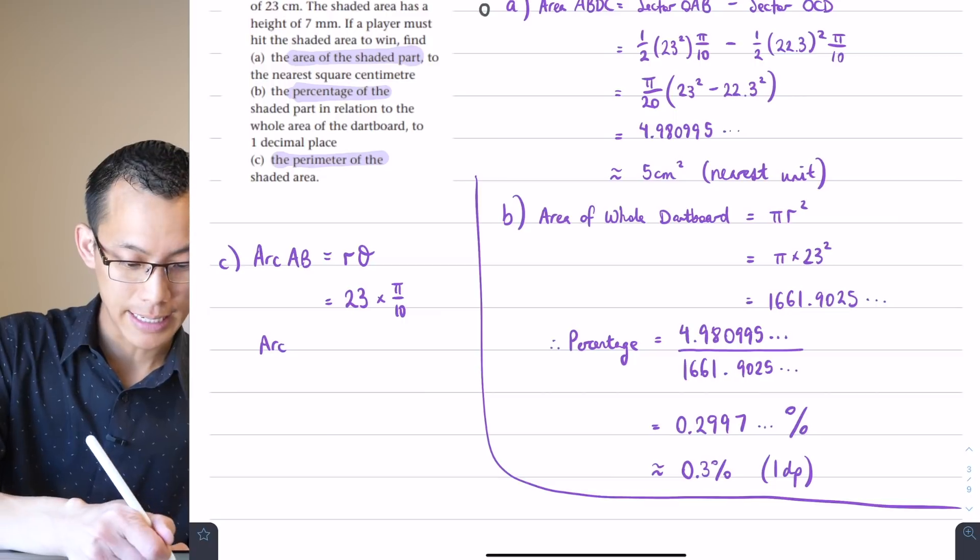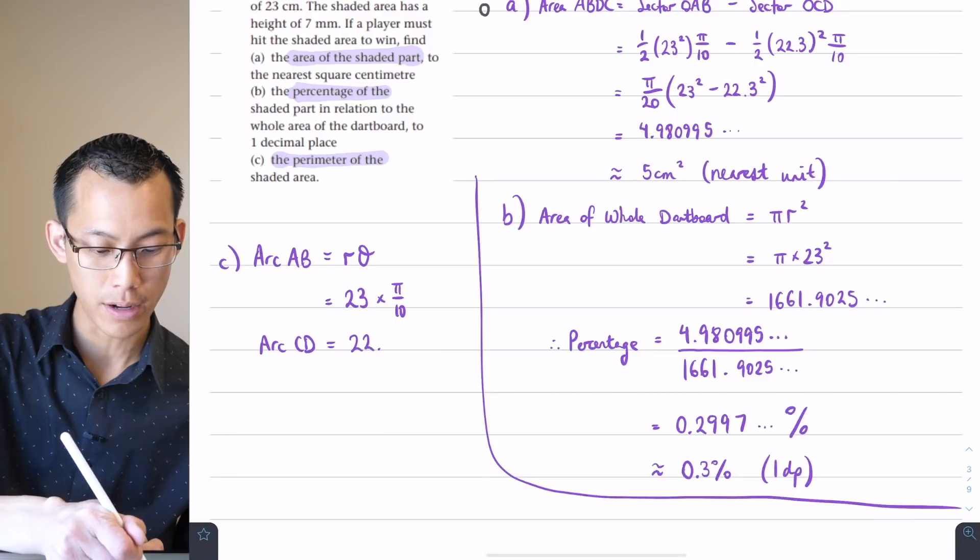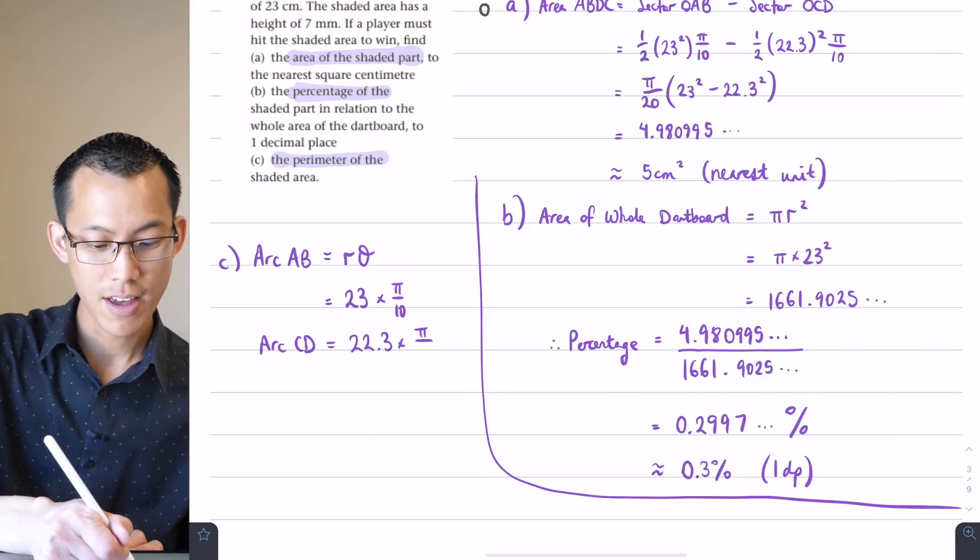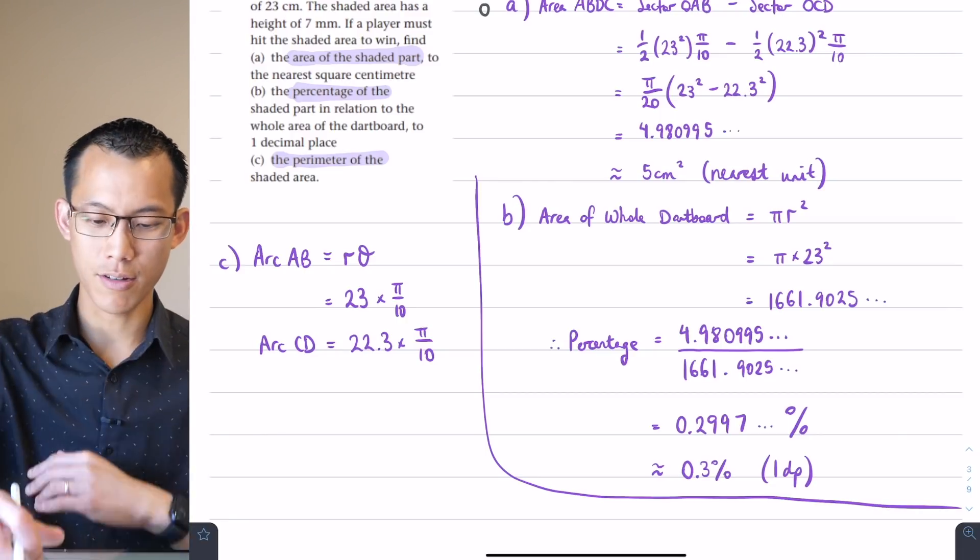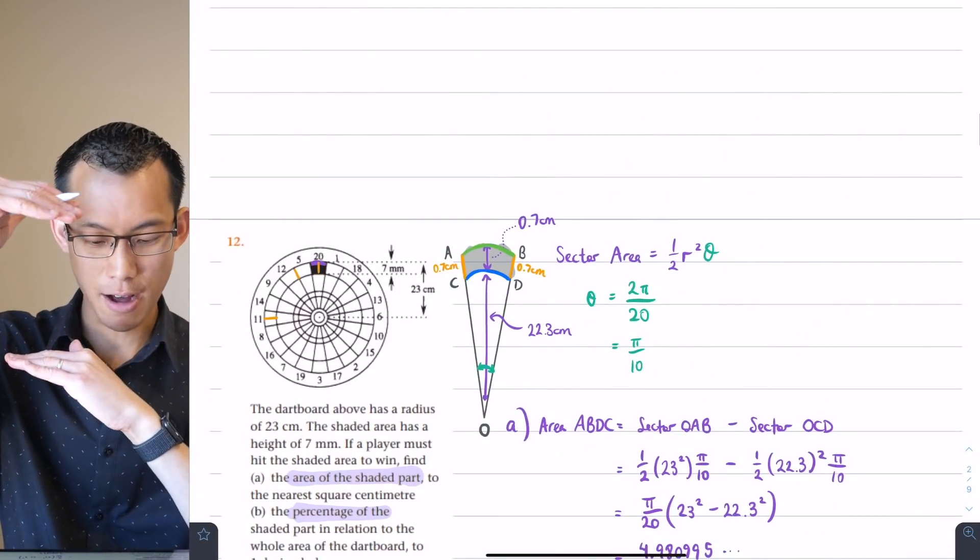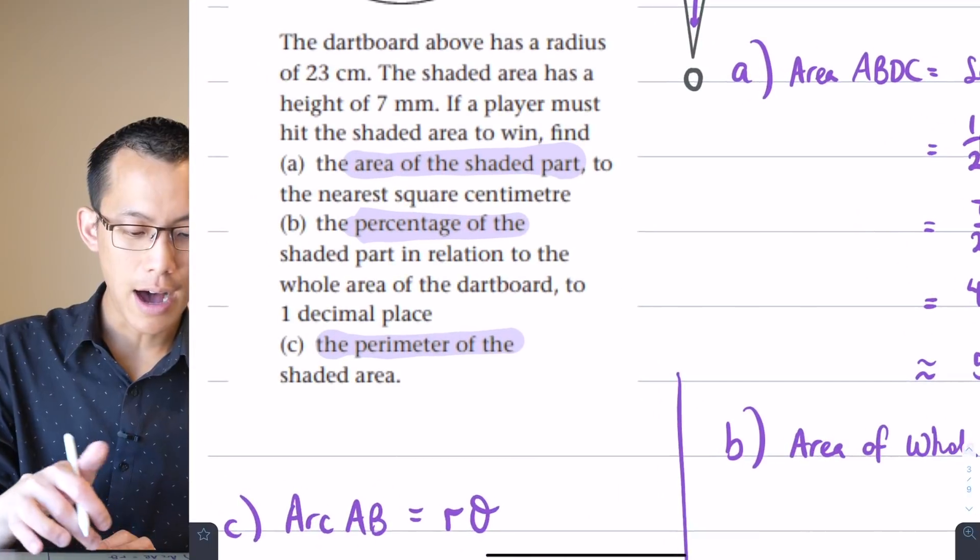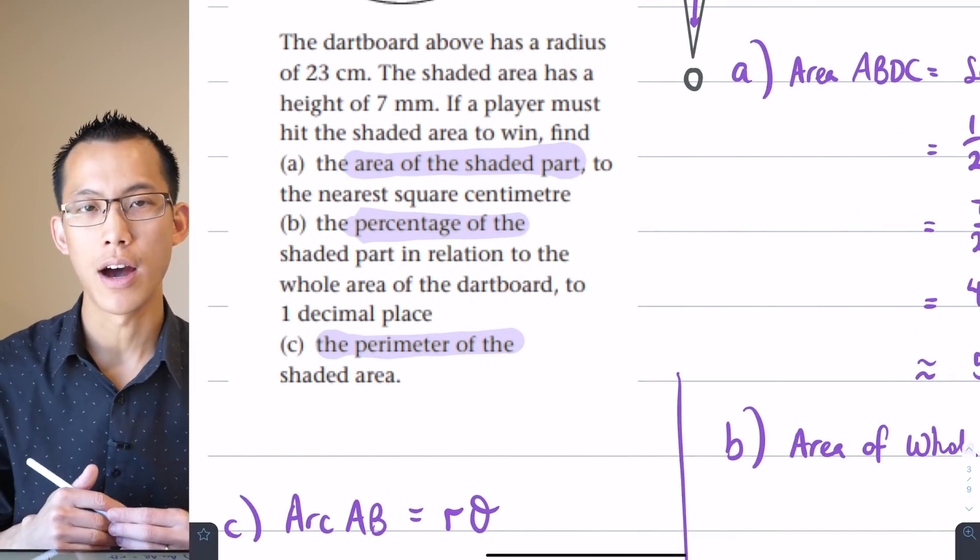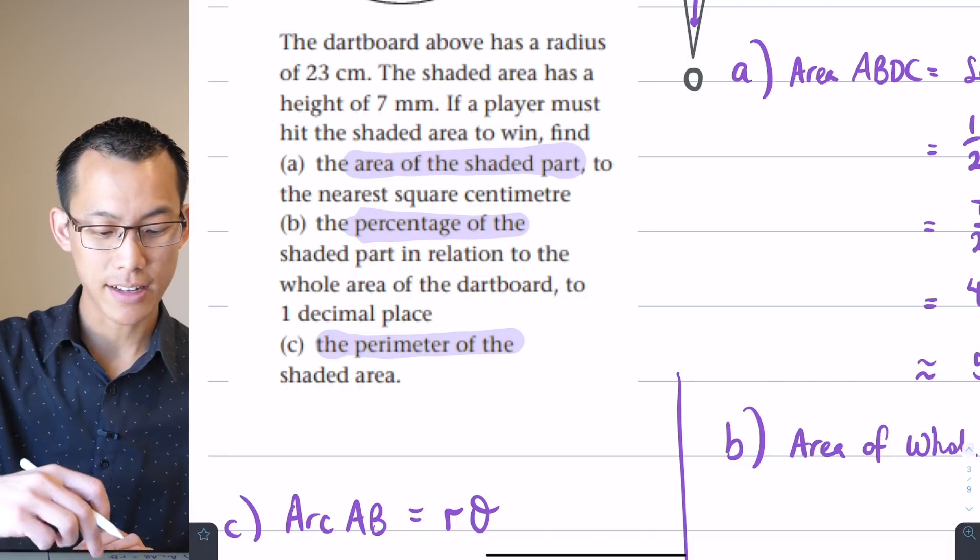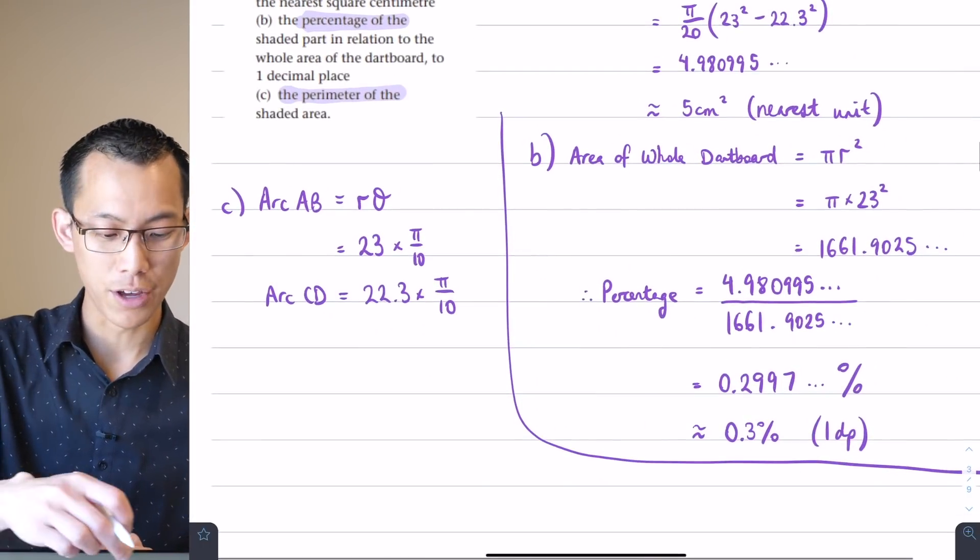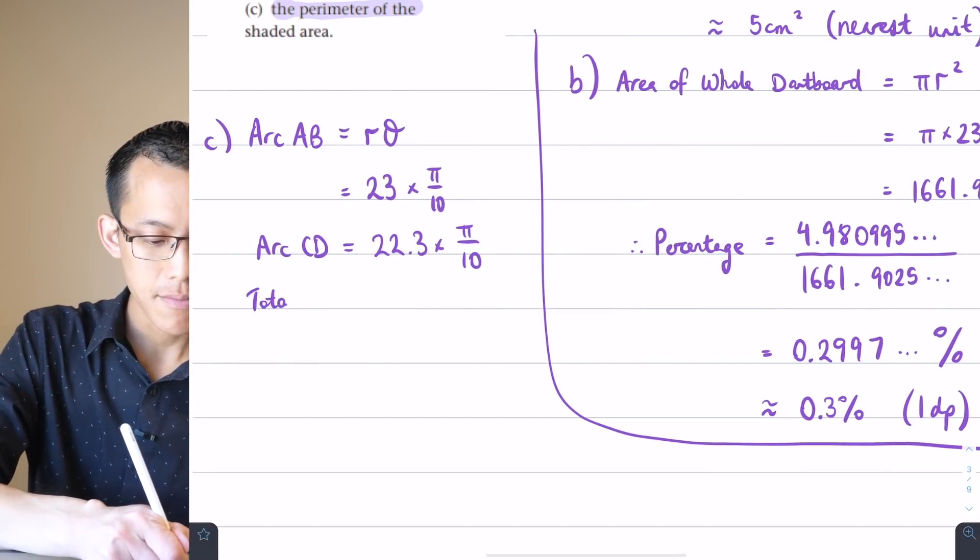I'm not even going to write that because you don't gain very much from it. And I'm going to write it again later when I put all these together. So that's arc AB. Arc CD is going to be instead of a radius of 23, it's going to be 22.3. And then we multiply by that same angle pi on 10. So there's the two arcs, the blue and the green ones up on the top and the bottom. And then I've got that 0.7, which happens twice. So you might notice as well, unlike in parts A and B, which have asked for approximation, part C doesn't say anything about approximation. So we can just leave this answer exact.